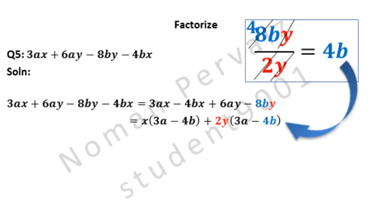Again, look at additional details. 2y is common, so if we divide 8by by 2y, here 2 cancels 8 four times because 2 times 4 are 8, and y is cancelled with y in division, and 4b will be left. And this 4b is written in our solution.